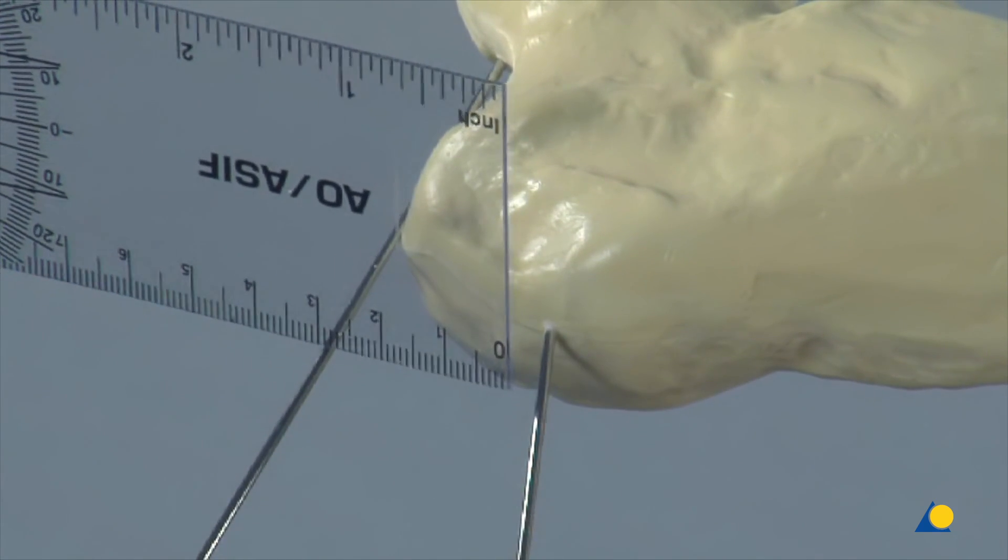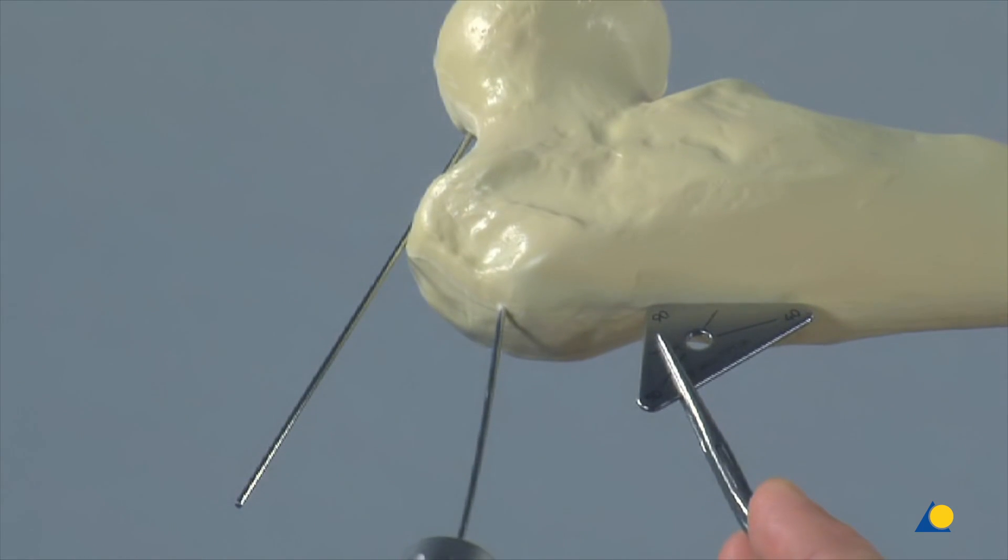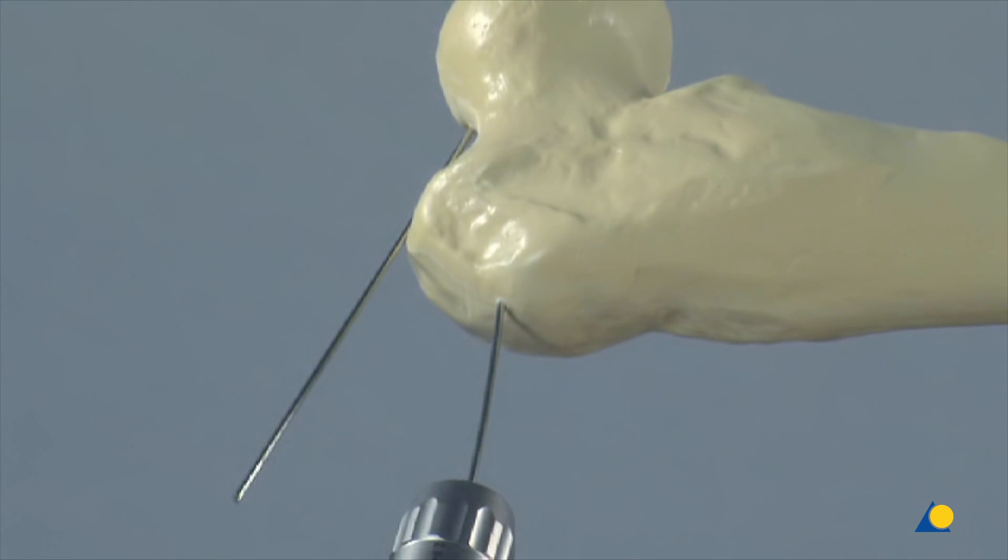A second K-wire is inserted into the trochanter, proximal to the site of the seating chisel window in the anterior portion of the femur. This K-wire should be parallel to the first in the axial view.